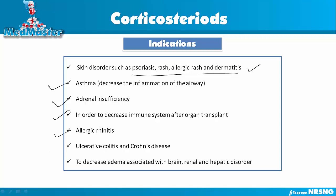Corticosteroids are given in ulcerative colitis and Crohn's disease, which are basically inflammation of the small intestine and large intestine. They are also used to decrease the edema associated with brain, renal, and hepatic disorders.